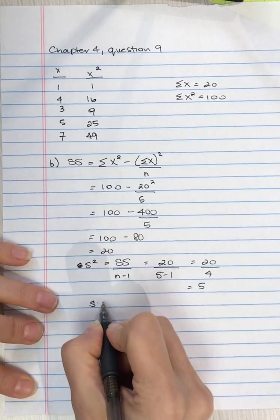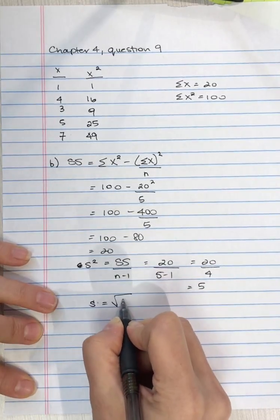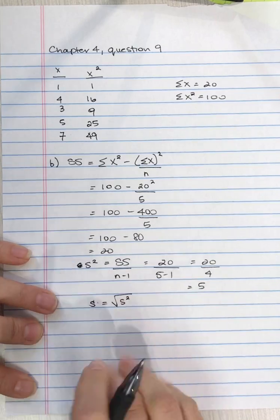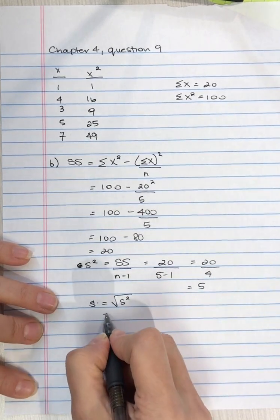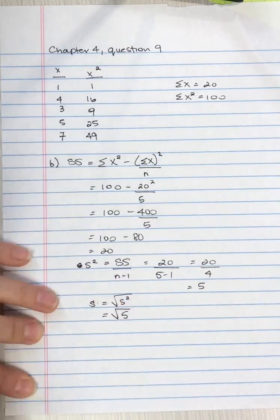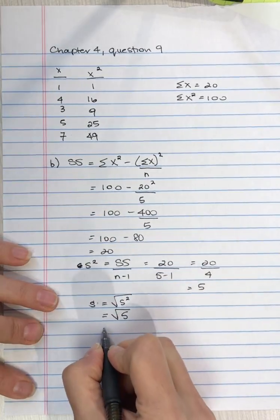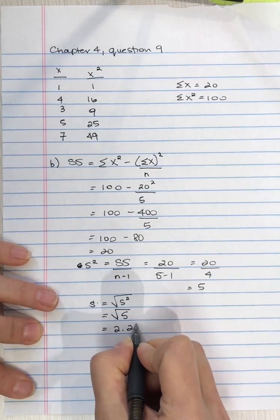And then the standard deviation equals the square root of the variance. What differs is in calculating the variance. So that's equal to the square root of 5, which equals 2.24.